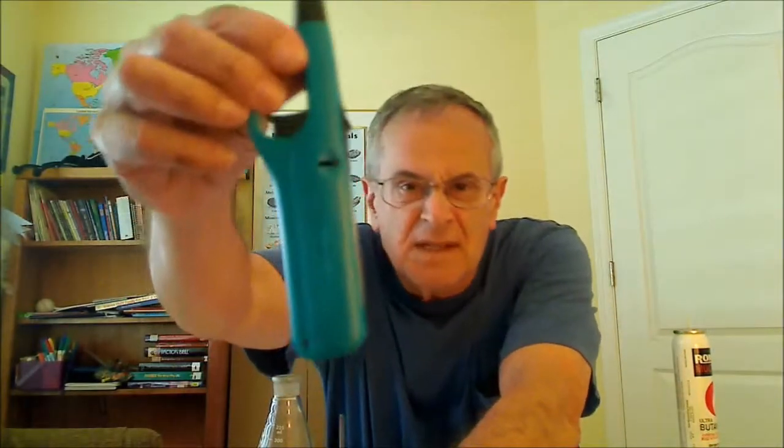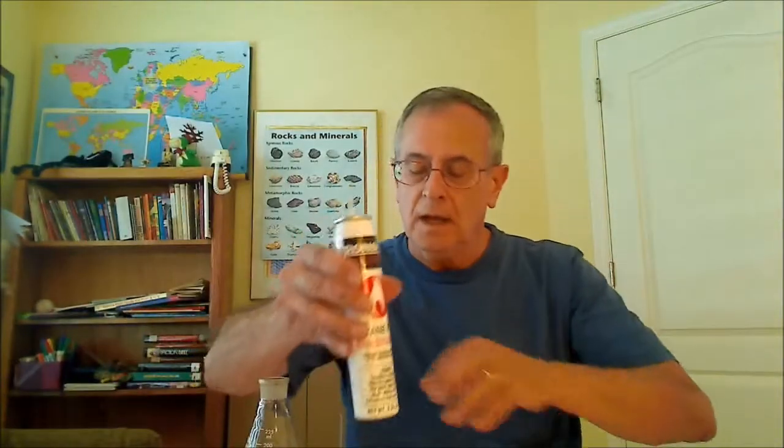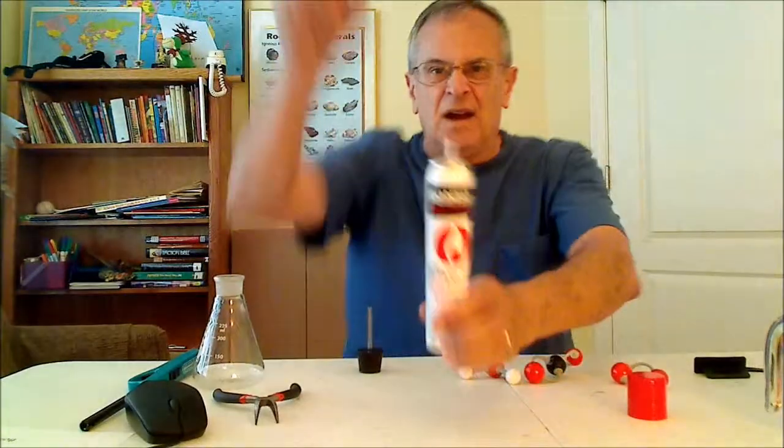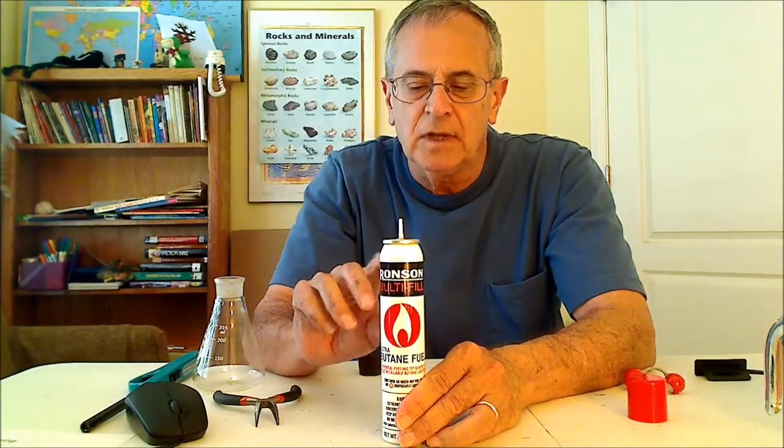Here is a butane lighter and I think you can see the liquid level in there and above it the vapor. Here I have a butane canister and you may not be able to hear this but I can hear the liquid sloshing around. If this were transparent you would see a liquid level and above it a vapor level.